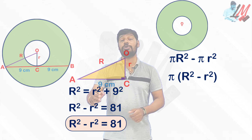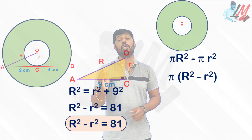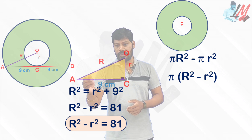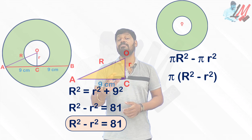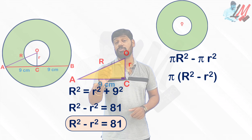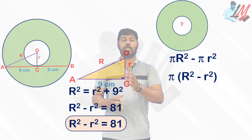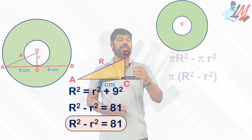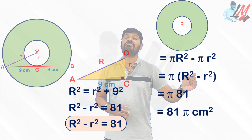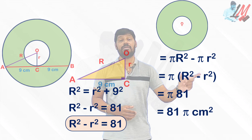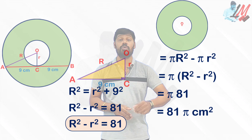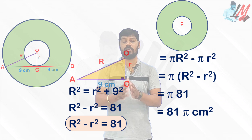Applying Pythagoras theorem: R² = r² + 9², which is r² + 81. Transposing small r² to the other side gives R² − r² = 81. Substituting into the ring area formula: area of ring = π(R² − r²) = π × 81. Therefore, the area of the ring is 81π centimeters squared.